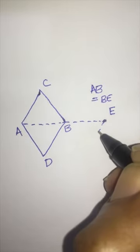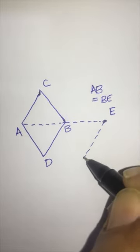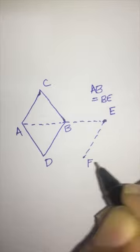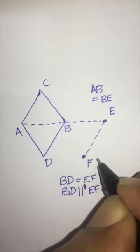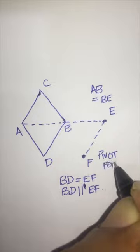A line is drawn from point E to F parallel to BD such that BD is equal to EF. F is the pivot point of the flap.